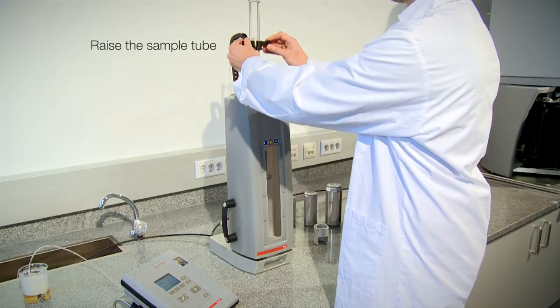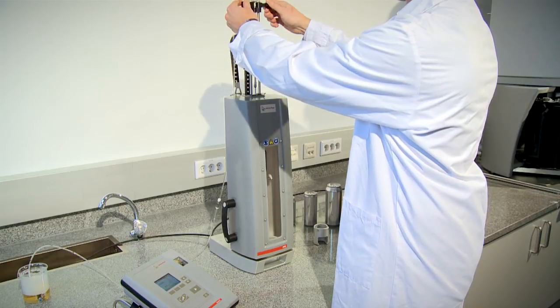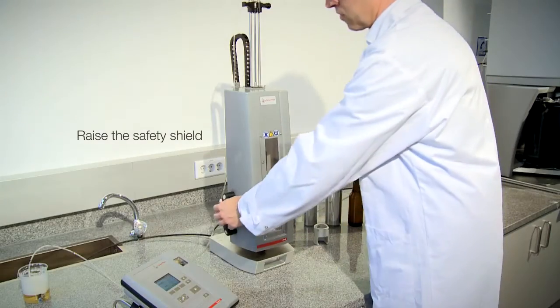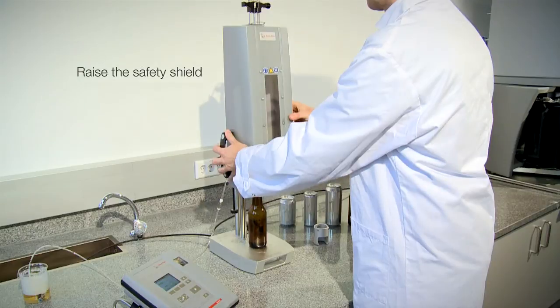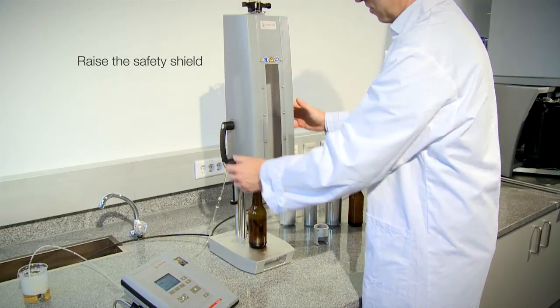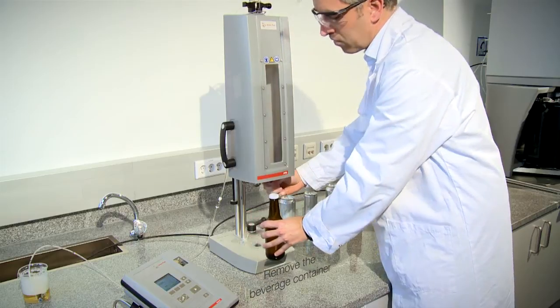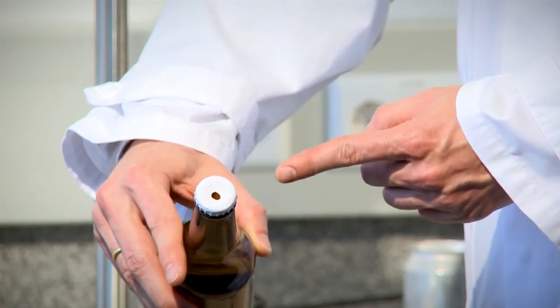Raise the sample tube and fix it in its uppermost position. Release the pressure. A gas spring causes the safety shield to rise. Lift the handle of the gasket holder and remove the bottle. The pierced hole is clearly visible.